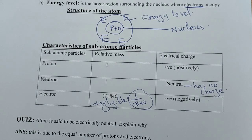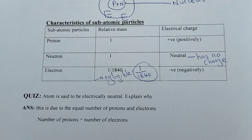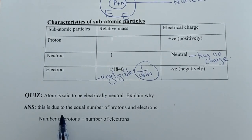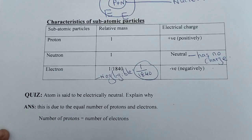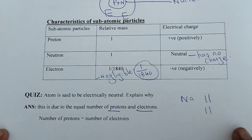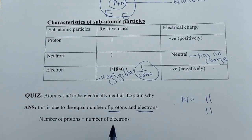Here is a question: an atom is said to be electrically neutral — explain why. An atom has no charge, meaning its charge is zero. This is due to the equal number of protons and electrons. For example, sodium has 11 protons and 11 electrons, so there is no extra charge. That is why the atom is electrically neutral — it has the same number of protons and electrons.